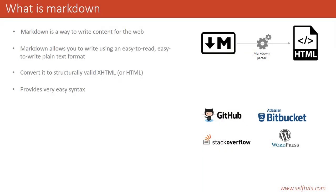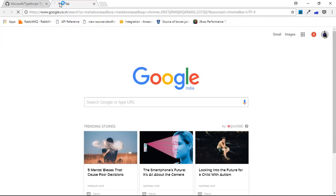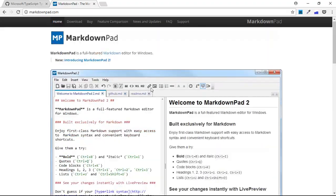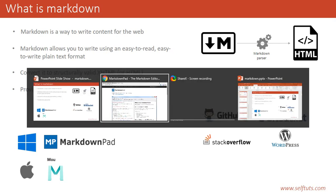You must be wondering how to write in Markdown format and preview the beautiful HTML pages. If you are on Windows, you can install MarkdownPad — just search for it, download it, and install it like a simple Windows software. If you are on Mac OS, you can install Mou. There is also a software used for writing in Markdown and displaying in HTML. Many online tools are also available.